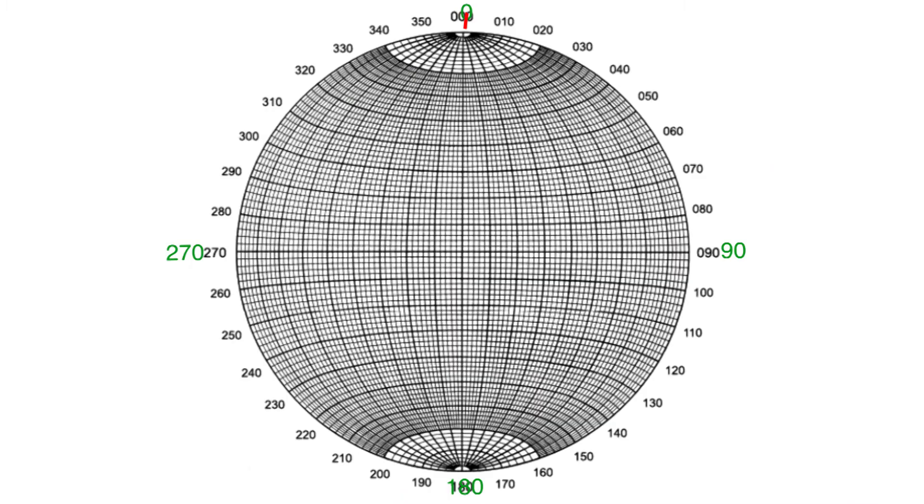To find the dihedral angle between two planes, first plot your two planes as poles, rotate your overlay so the two poles lay on a great circle, and count the degrees on that great circle between the two poles, and that is the dihedral angle between those two planes.